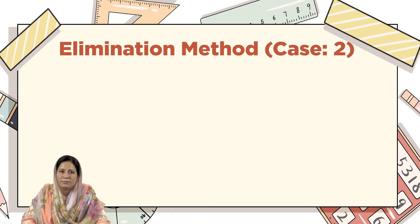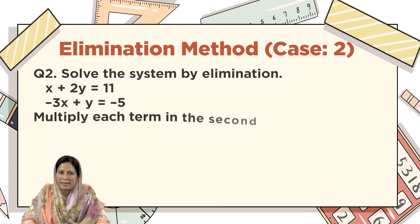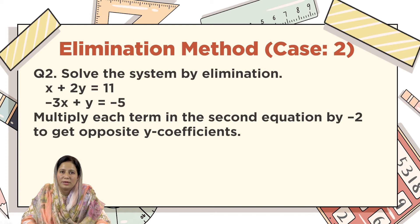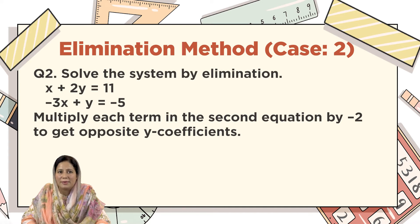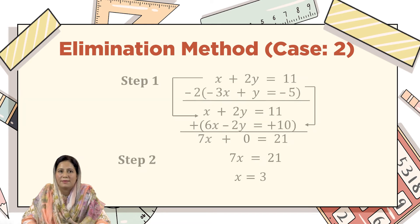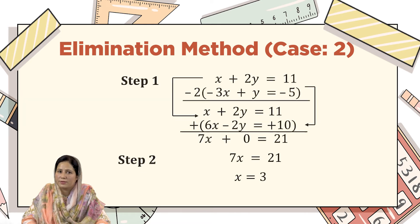Case 2, Question 2: Solve by the elimination method. Equation 1 is x plus 2y equals 11, and equation 2 is minus 3x plus y equals minus 5. We will multiply each term in the second equation by minus 2 to get the opposite y coefficient. Step 1: after multiplying the second equation by minus 2, it becomes plus 6x minus 2y equals 10.